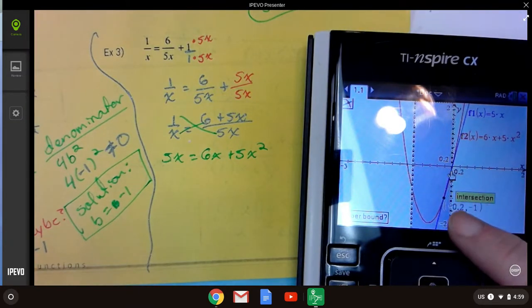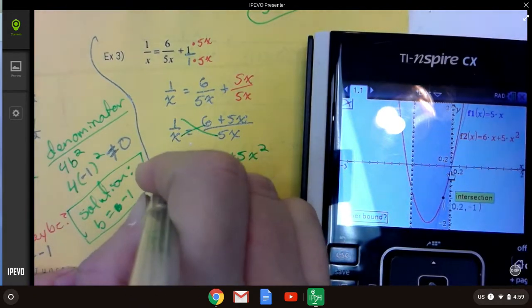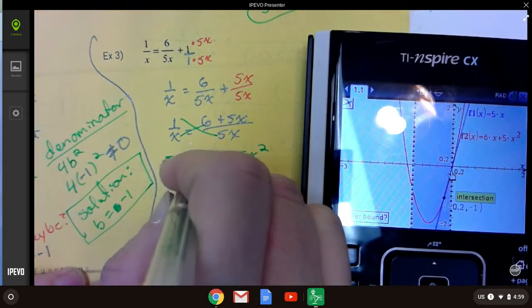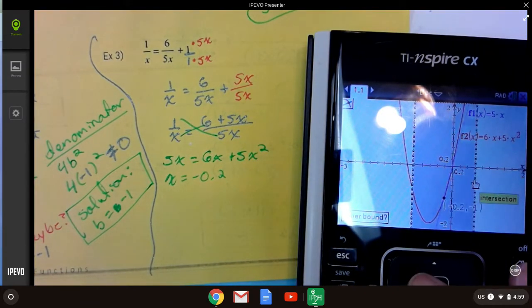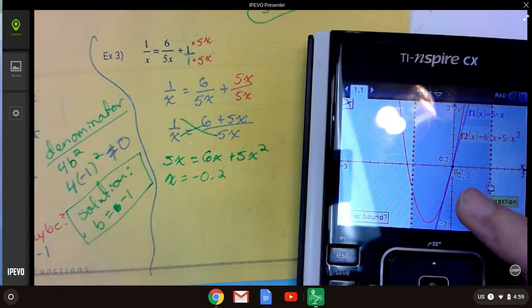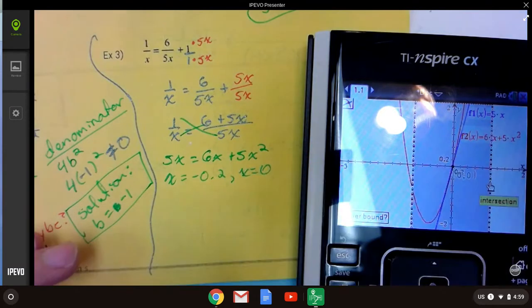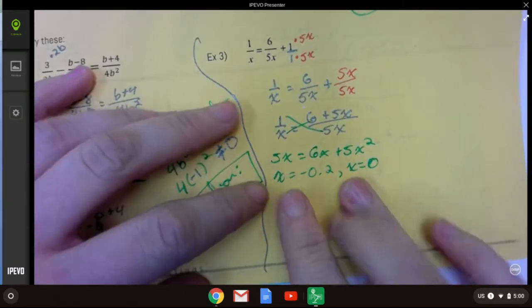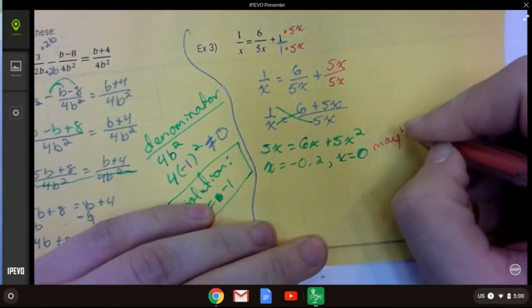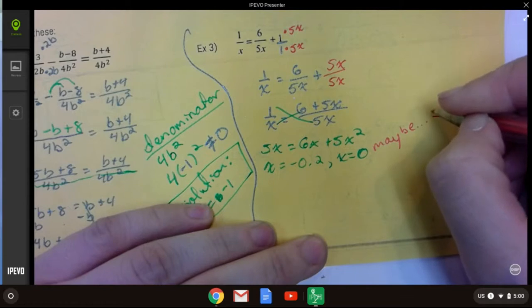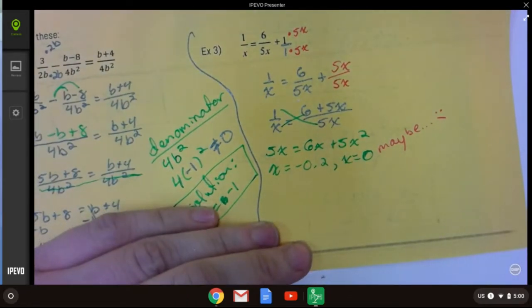Okay we got one intersection at negative 0.2 and the other one at x equals 0. Now remember these are maybe solutions. Maybe. Skeptical face.